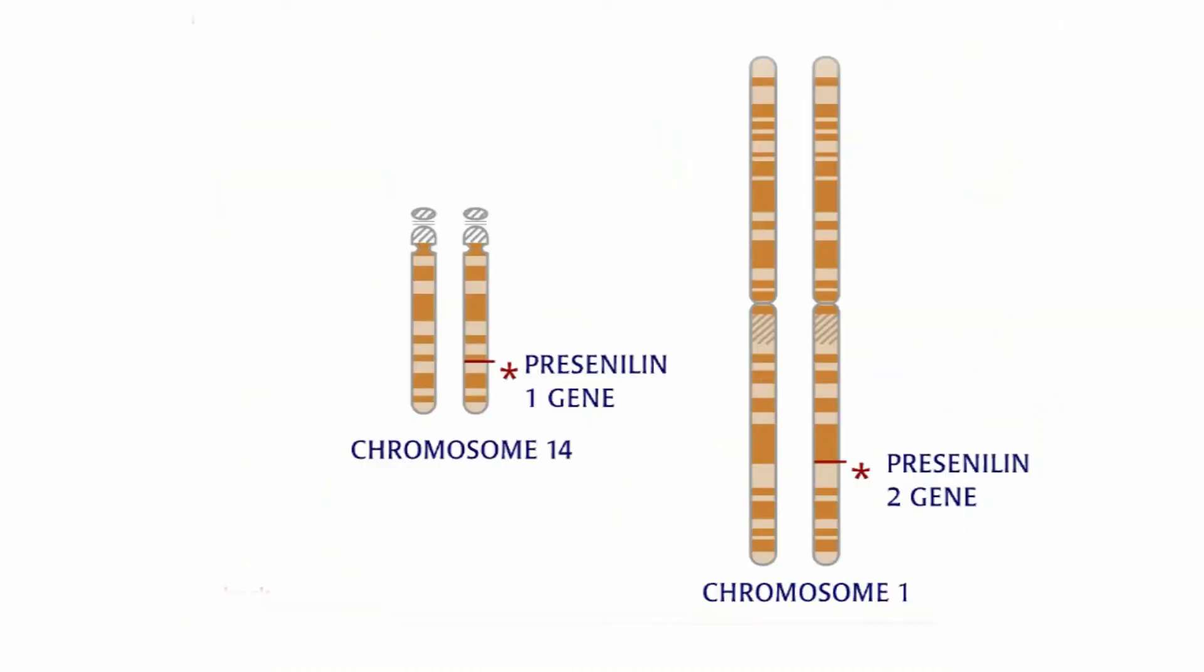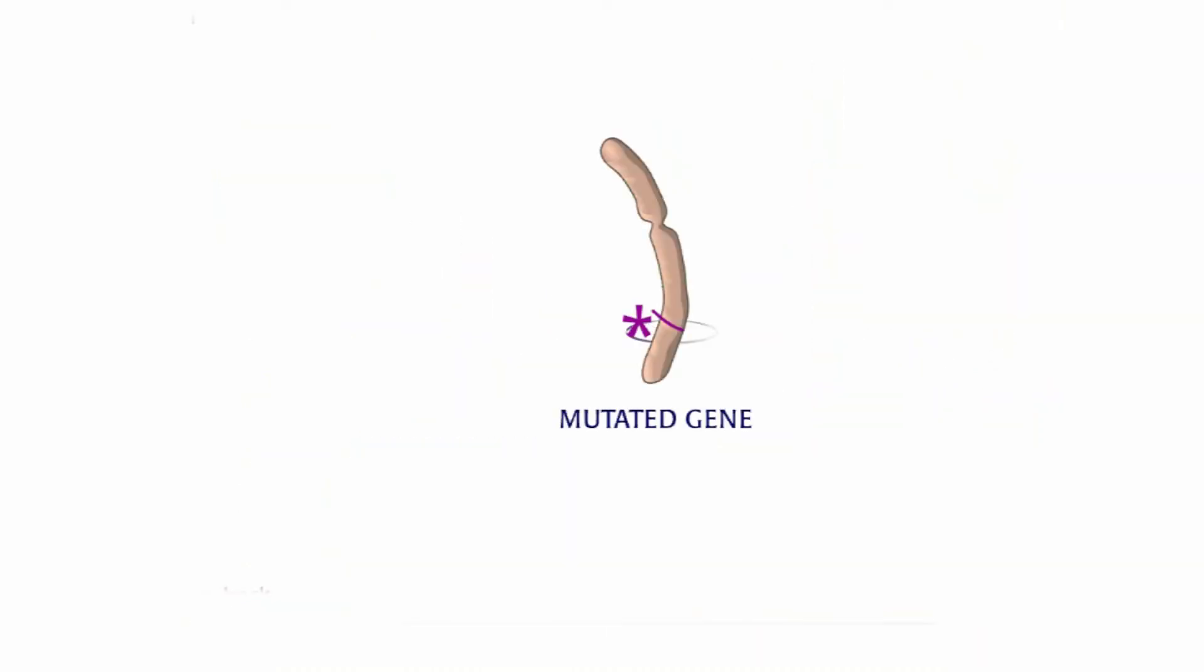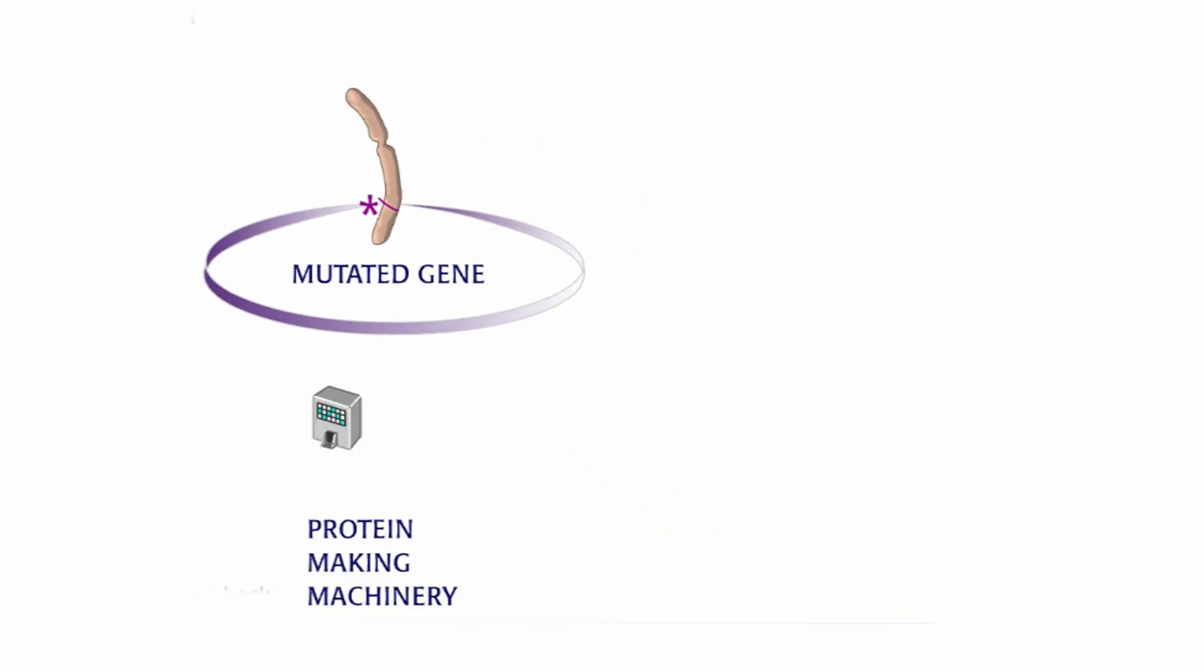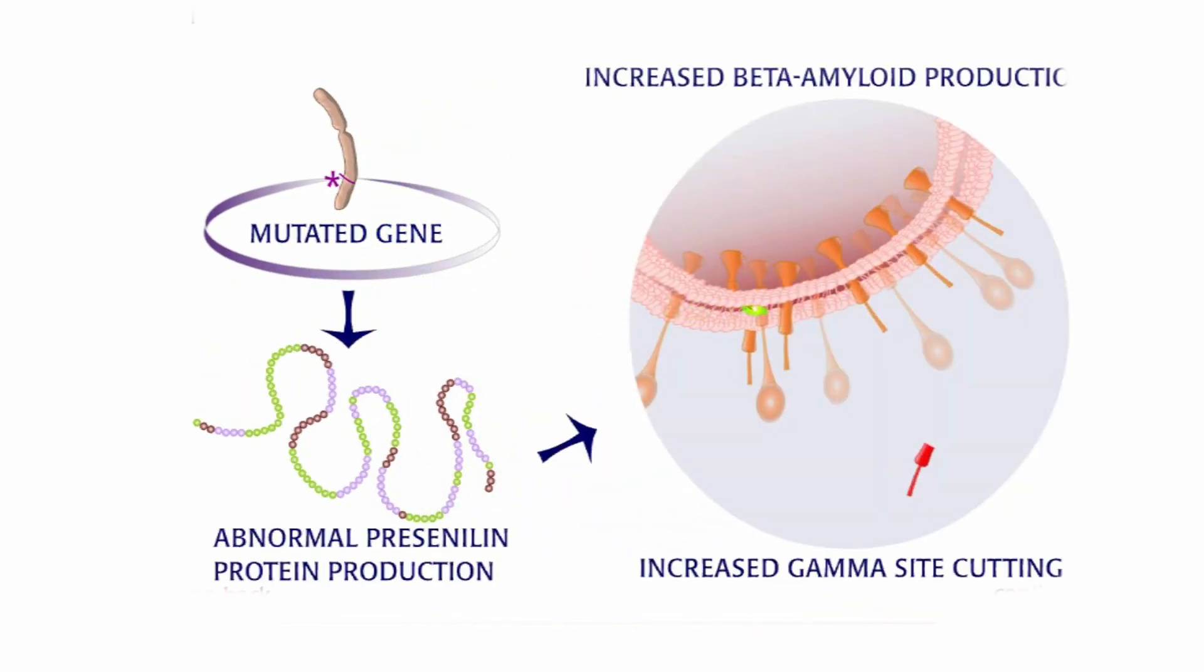There seems to be strong evidence that mutations in the presenilin-1 and 2 genes lead to an increased amount of beta amyloid, the plaque-causing protein, possibly by an upsurge in gamma-secretase cutting of APP protein.